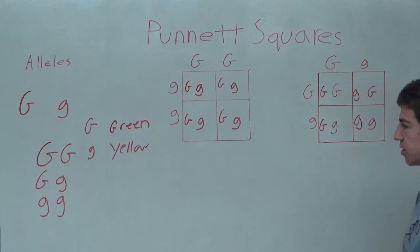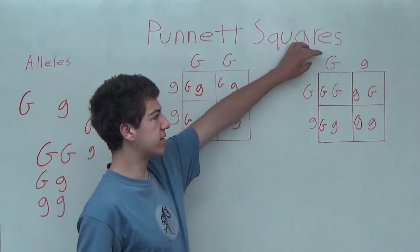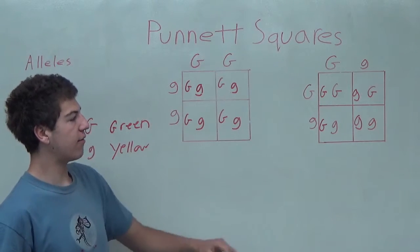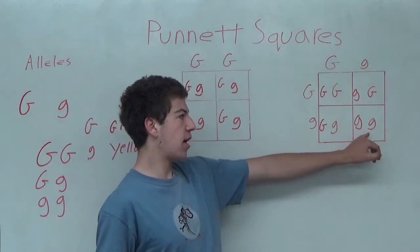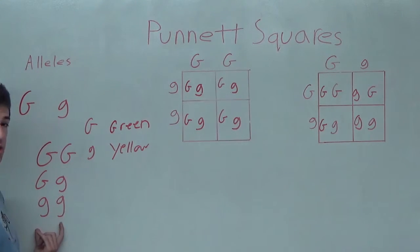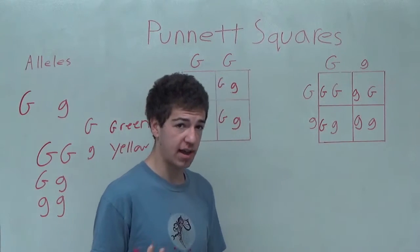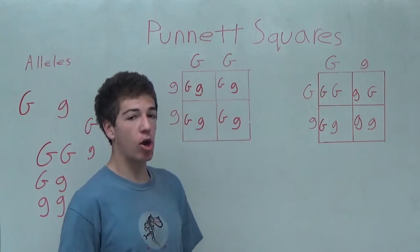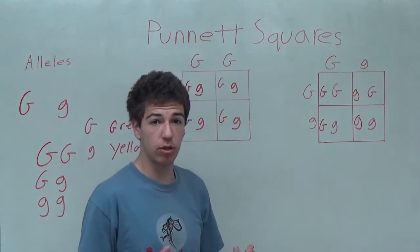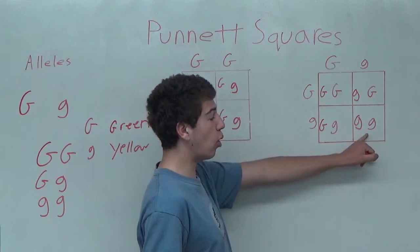Now, your teacher may ask you, what are the chances of you having, with two parents with a genotype of capital G and lowercase g, of having the offspring be yellow? In this case, since yellow is represented by two lowercase g's, to determine the probability of the offspring having the yellow trait, we count up how many squares in the Punnett square have the yellow trait shown in its phenotype, which is only one.